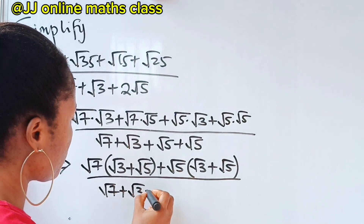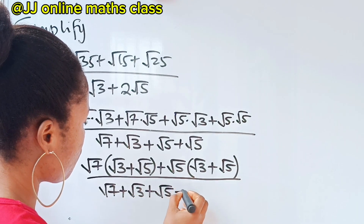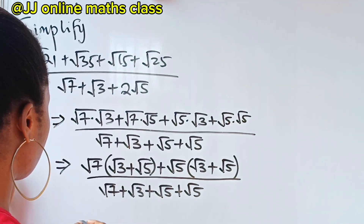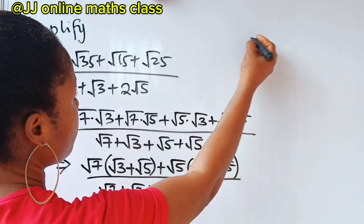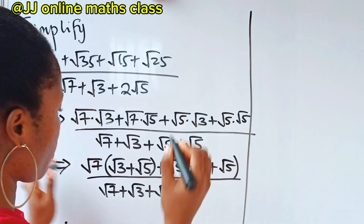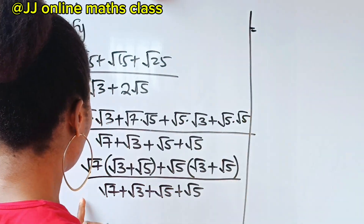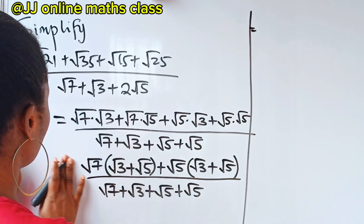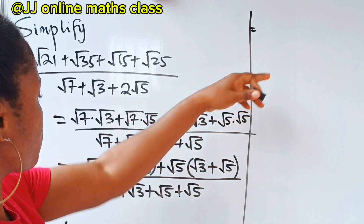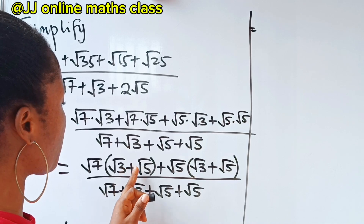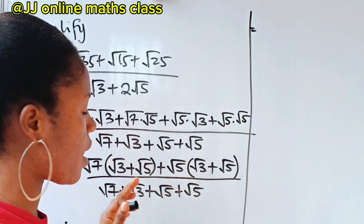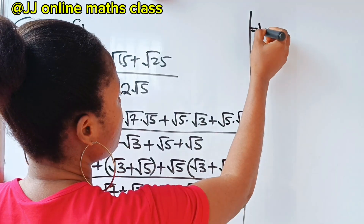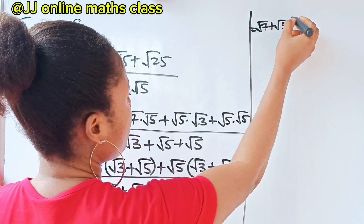Now this is equal to... so we have √7 times (√3 + √5) plus √5 times (√3 + √5), and since (√3 + √5) is common here, we can factor it out.